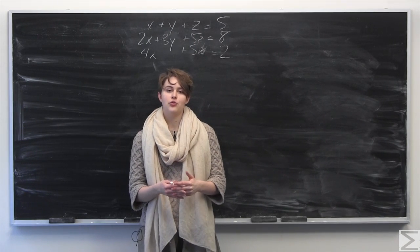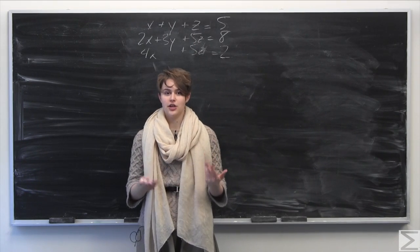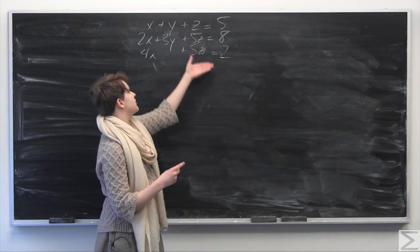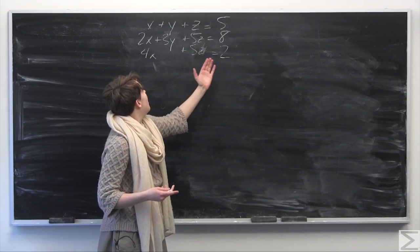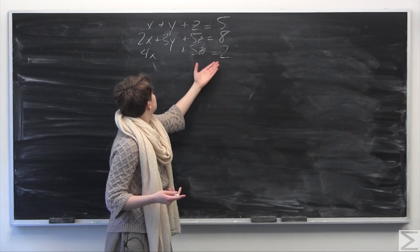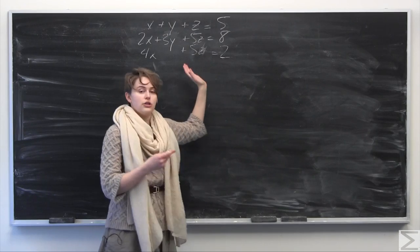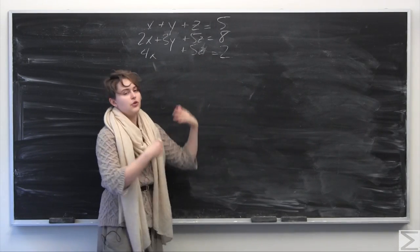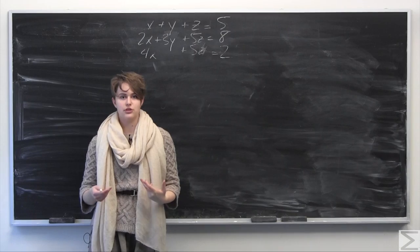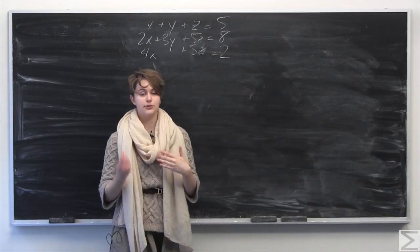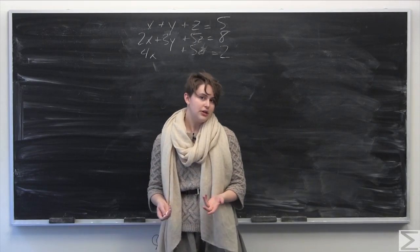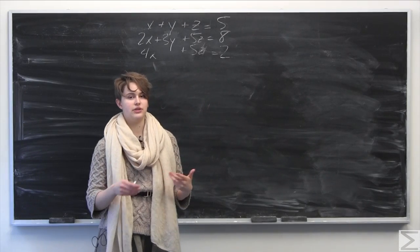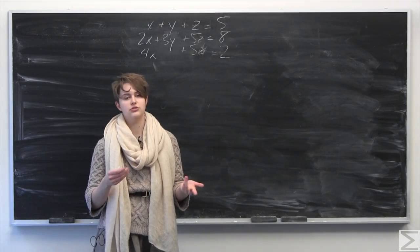Gauss-Jordan elimination is another way for us to solve systems of equations using matrices instead of just solving the equations directly. The way we are going to approach solving the system of equations using Gauss-Jordan elimination is that we're going to set up what's called an augmented coefficient matrix, and then we're going to put it into reduced row echelon form. At the end of this video, I'll explain briefly how you would check your work using your calculator.